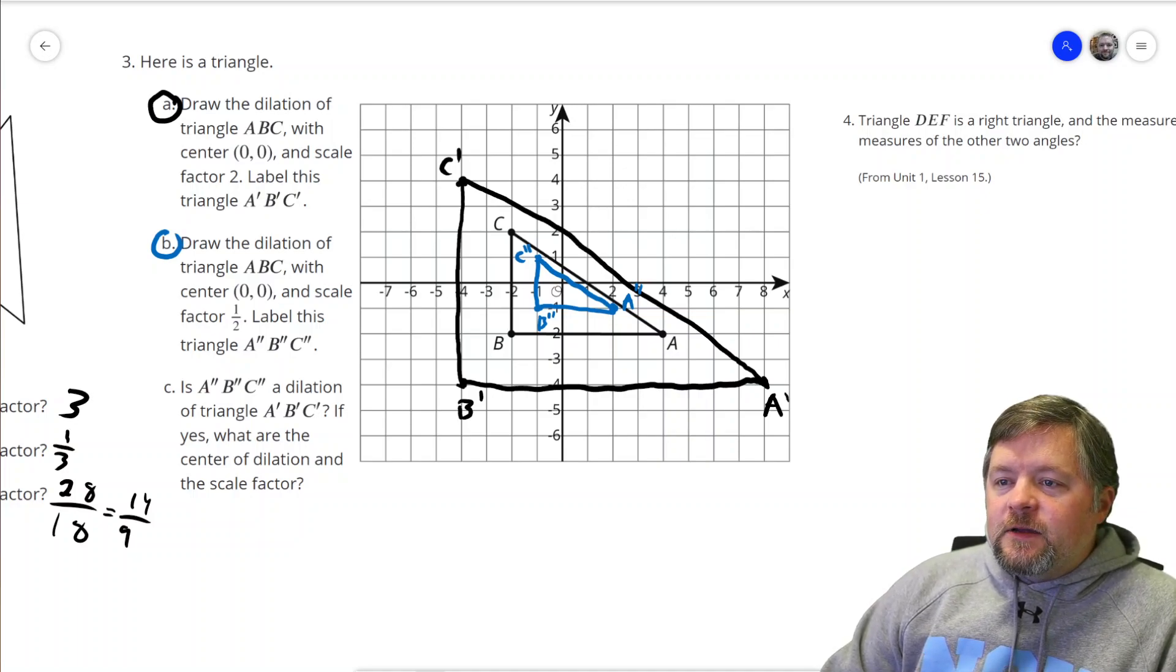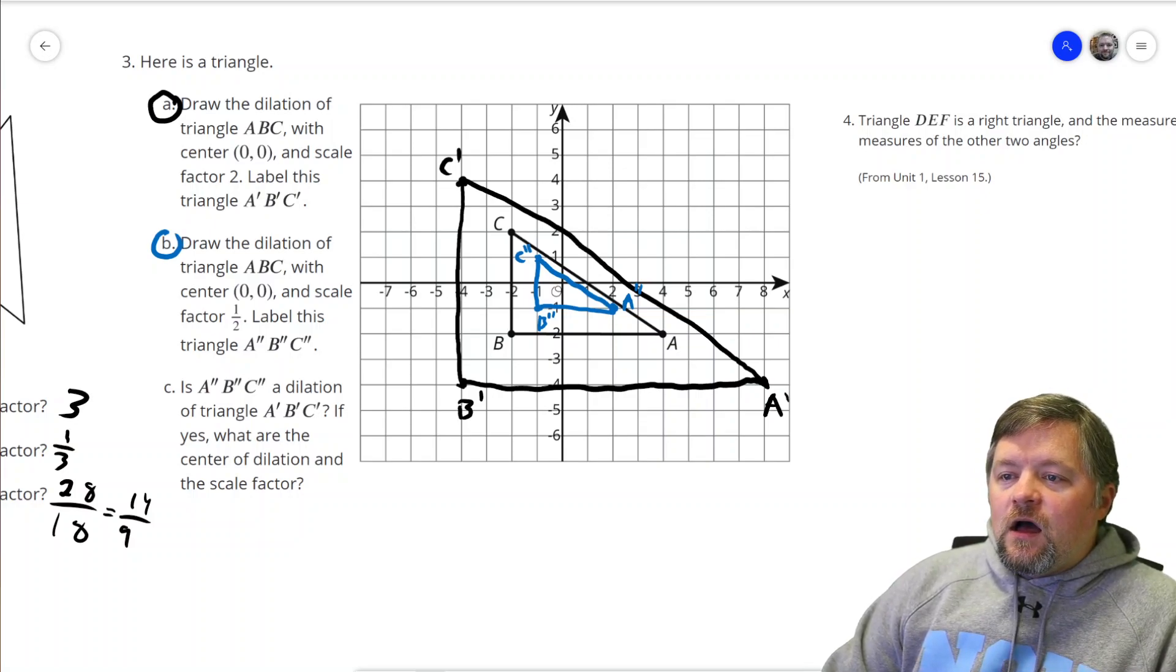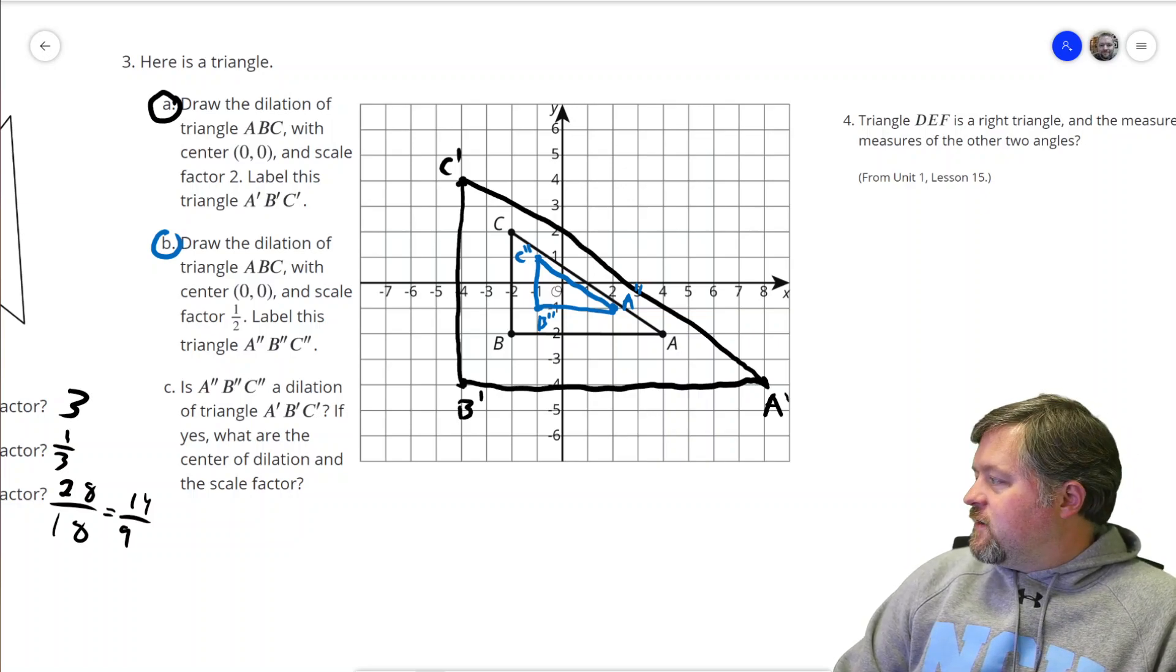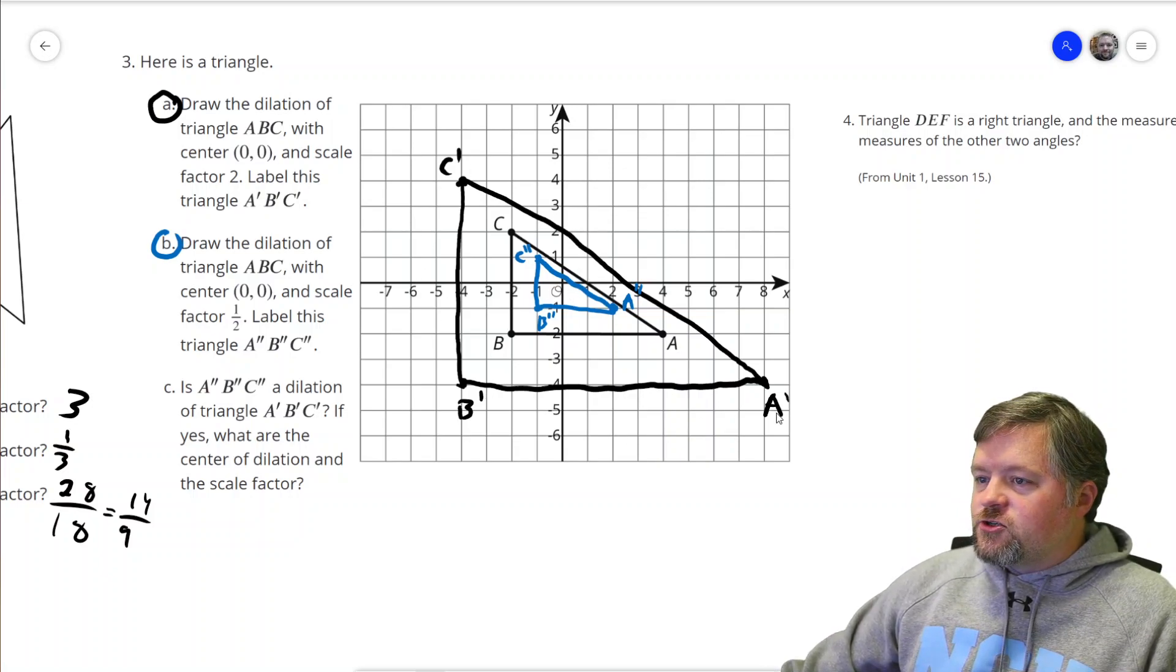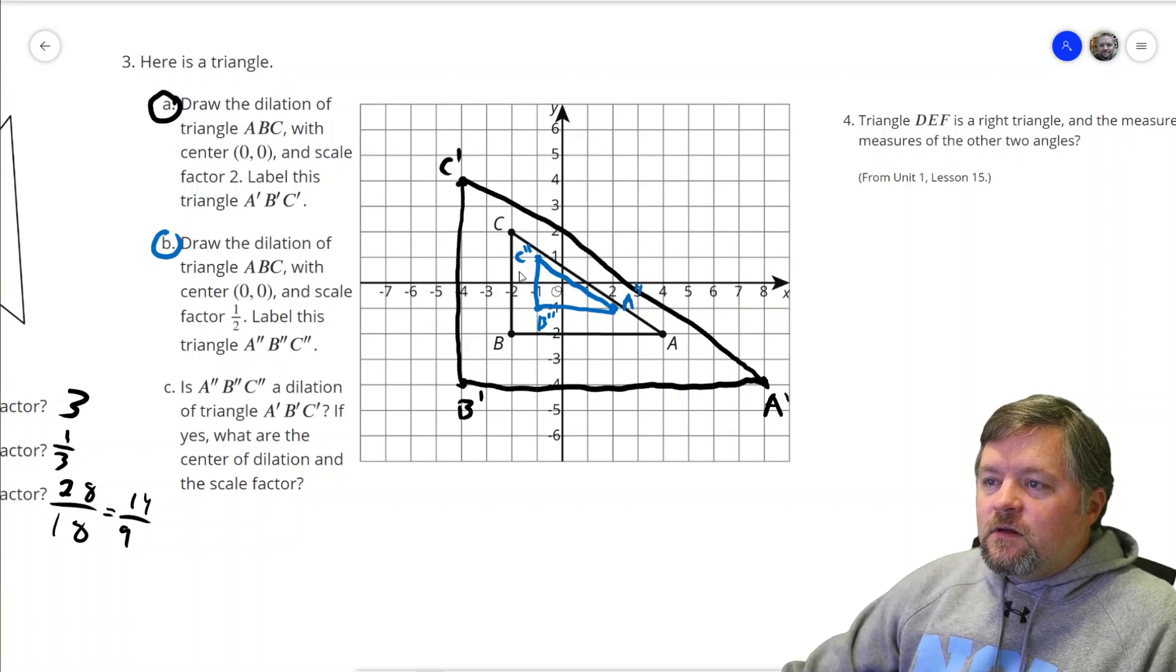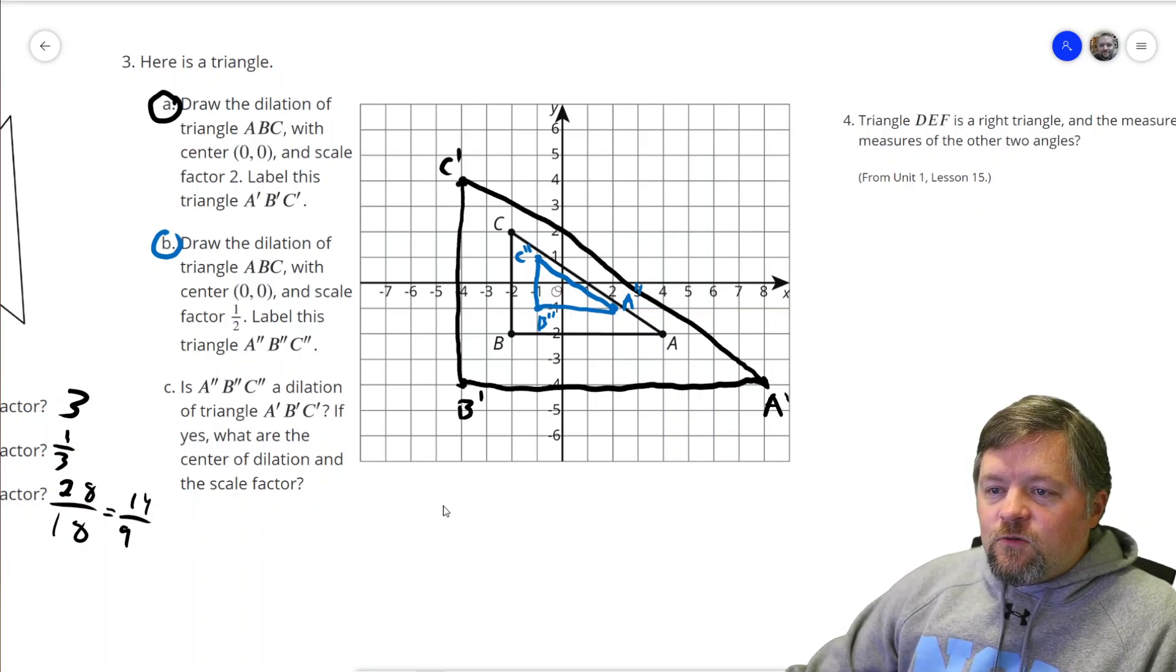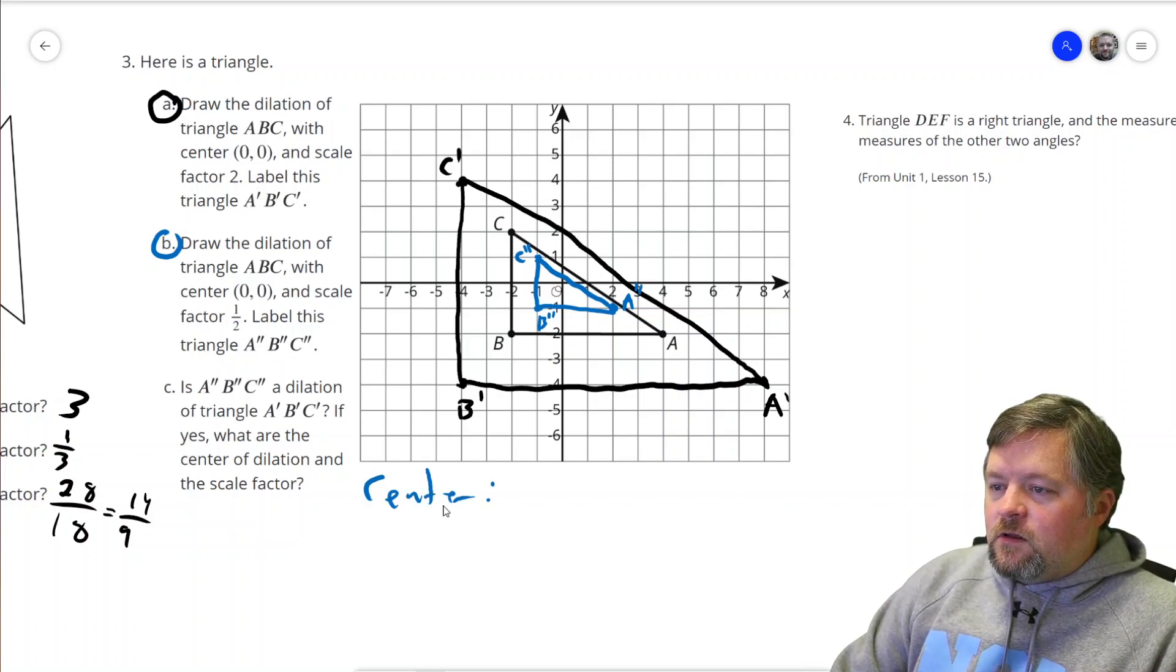Is A prime, B prime, or A double prime, B double prime, C double prime a dilation of A prime, B prime, C prime? Is this smaller blue one a dilation of this larger black one? Is this smaller blue one a dilation of this larger black one? Yes, it is. Yes, it is. Because all of those dilations are centered in the same place. So what will the center of dilation be? The origin.